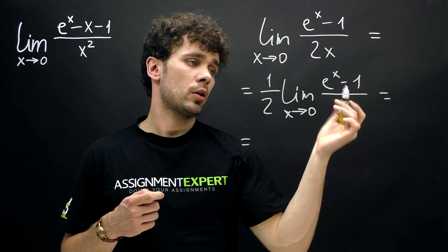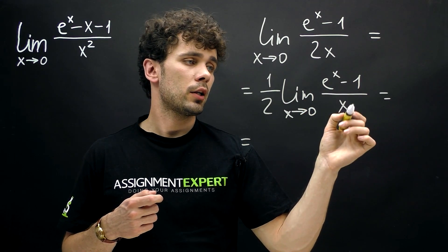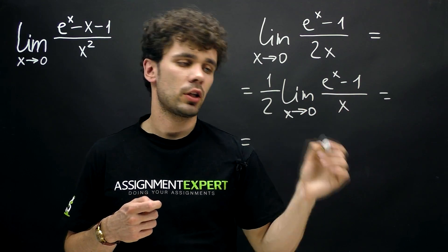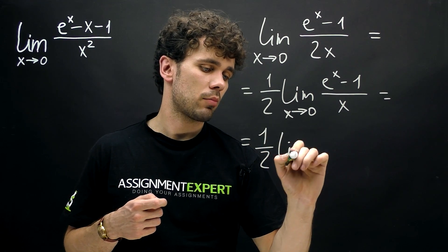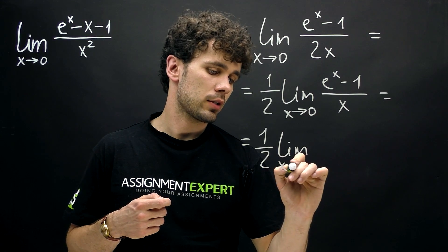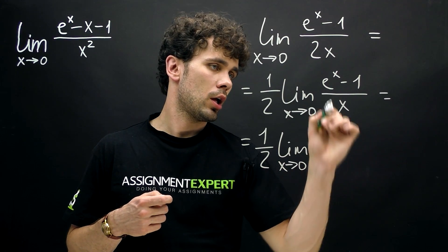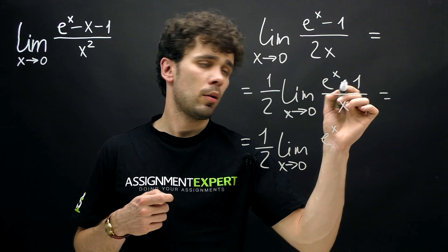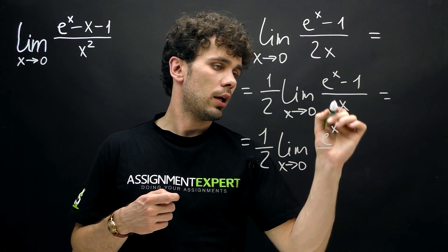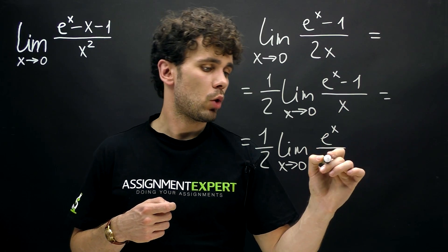So again we have zero over zero and now we will find derivatives of numerator and denominator. We have one half times limit for x tends to zero. And now in the numerator we have e raised to the x power minus zero.